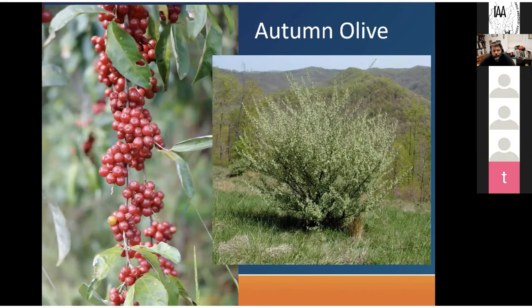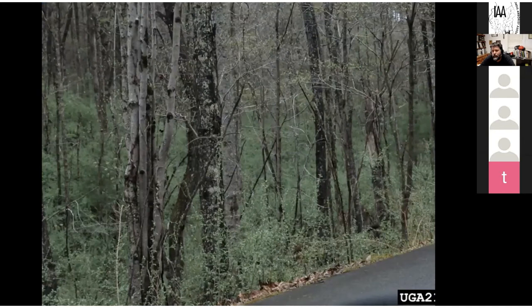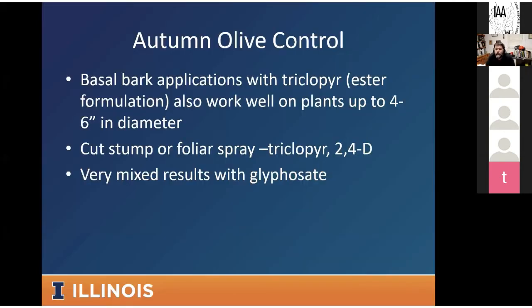Autumn olive is similar to bush honeysuckle but is less shade-tolerant — you'll find it at forest edges, in open forest, or open lands. It produces a ton of seed and spreads quickly, a major issue in open land management and tree plantings. That gray-green color with the little dots on the leaves and fruit really jump out and make it easy to recognize. This one is opposite in terms of what controls it compared to honeysuckle — we've had mixed results with glyphosate — but either 2,4-D mixed with triclopyr, or triclopyr straight, work really well. Basal bark applications are my preference, but cut stump and foliar on small ones also work. It's not a hard plant to control.